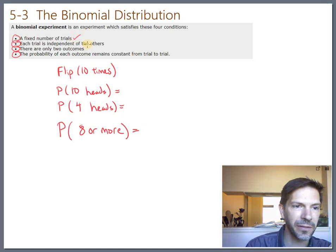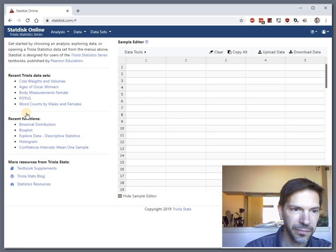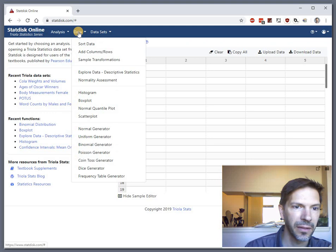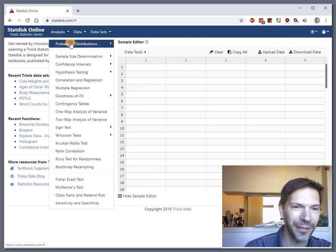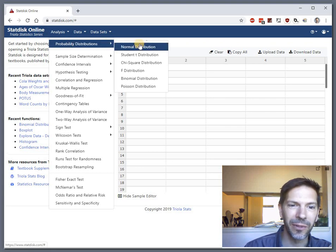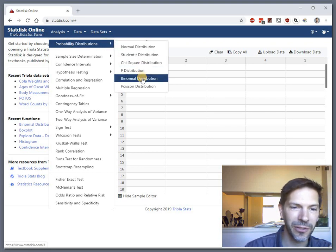Particularly that fixed number of trials and that constant probability are going to be important when we actually type numbers into StatDisk. Okay, so let's flip over to StatDisk now. And we'll go to analysis, and into probability distributions. And we're looking at the binomial distribution. There's a few others here we're going to look at also in future sections.